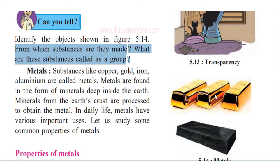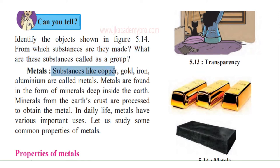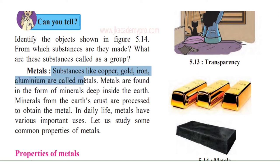We know that this is gold, and this looks like an iron bar. So these are metals. Substances like copper, gold, iron, and aluminium are called metals.